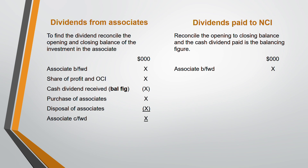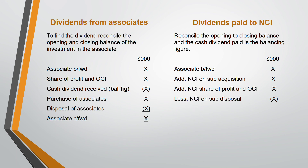For dividends paid to NCI, a correction: it is NCI brought forward, not associate. Start with NCI brought forward, add NCI on subsidiary acquisition if you have bought a subsidiary, add NCI share of profit and OCI. Deduct on disposal. The cash dividend paid to NCI is the balancing figure. The closing NCI balance will be given to you. You also pay dividend to the parent but for parent there is no separate working - you get that amount directly as a balancing figure.